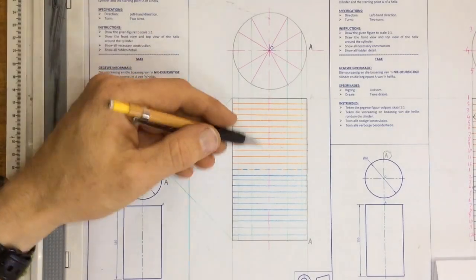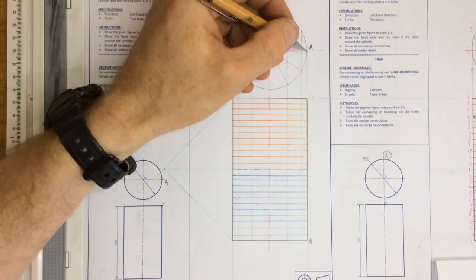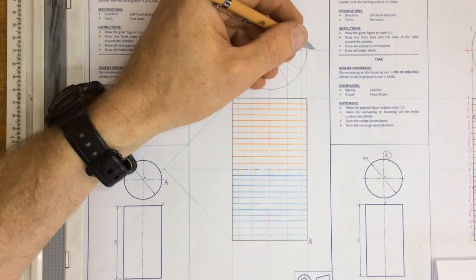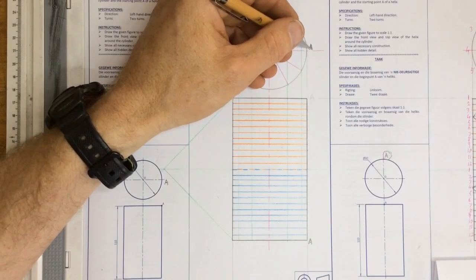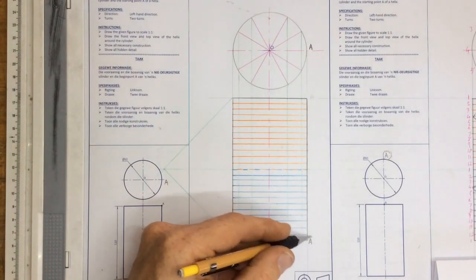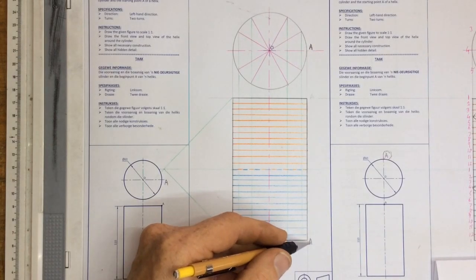I'm going to be doing another left-hand thread over here. I've now got the starting point of A at the side over here, and I'm showing that A is down at the bottom over here.